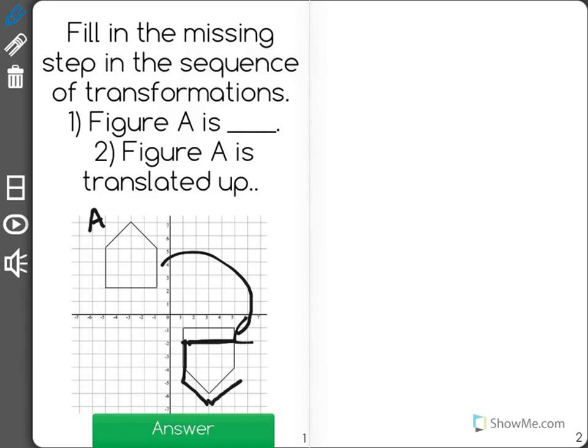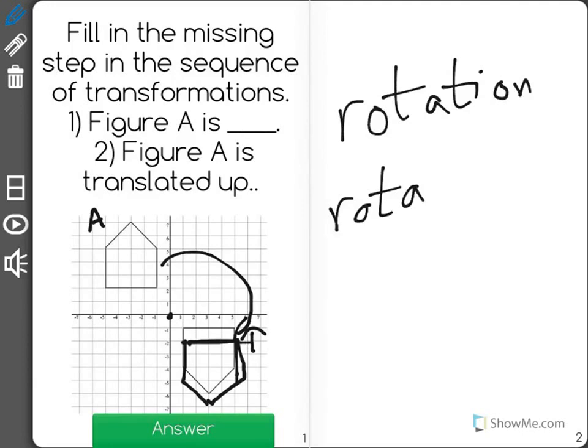Well the only type of transformation that could happen there is a rotation. The figure was taken and it was turned around the origin, and then the second move was that it was translated up. So Figure A is rotated, but the question is how much?